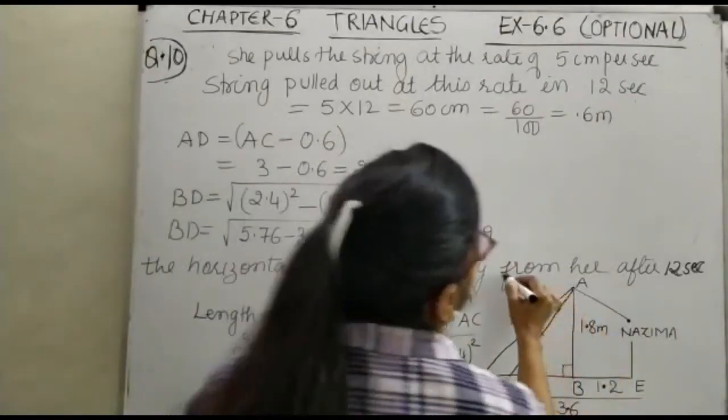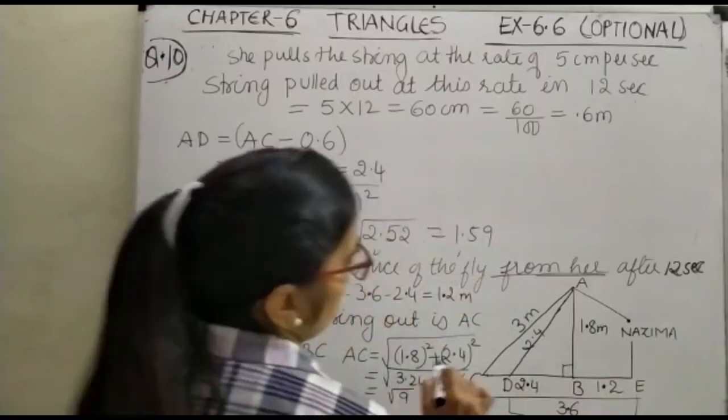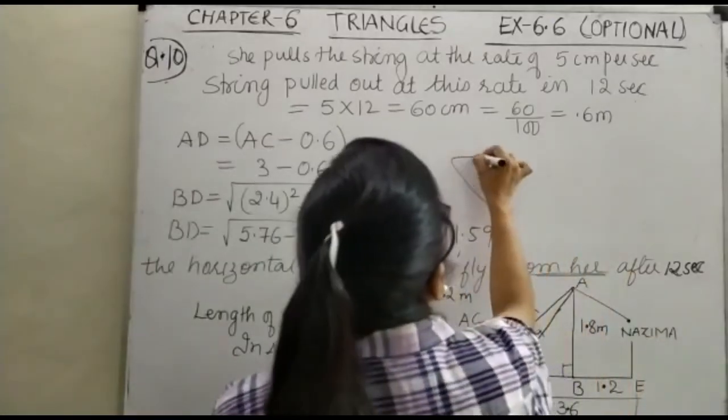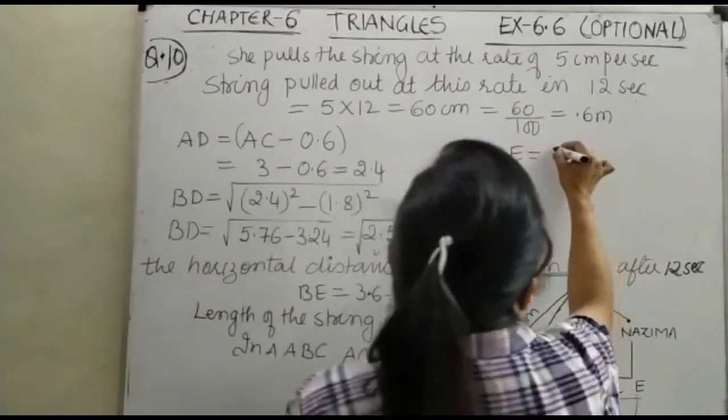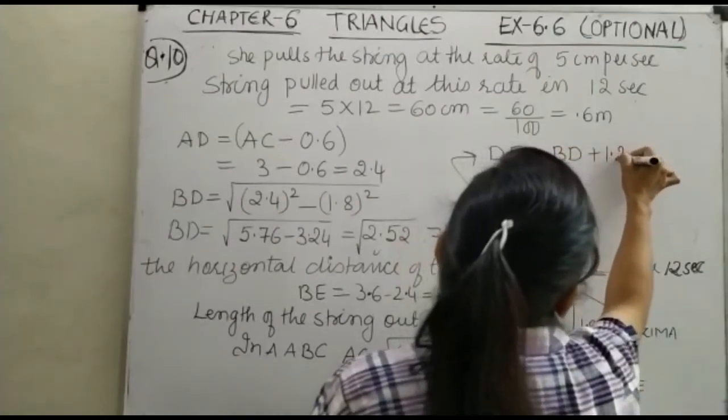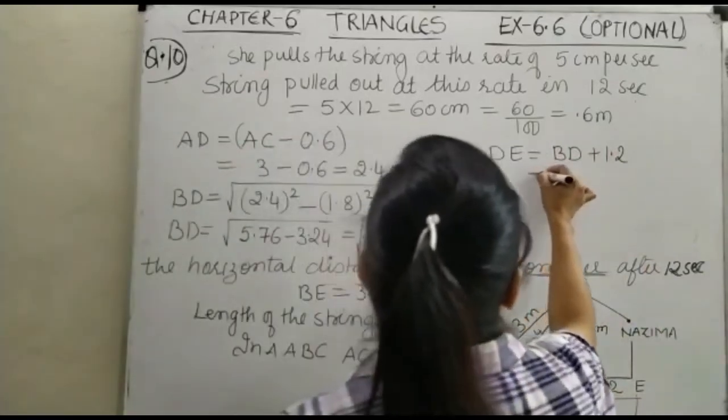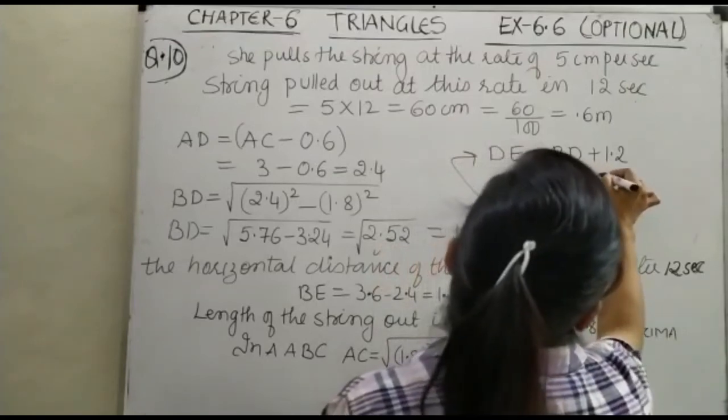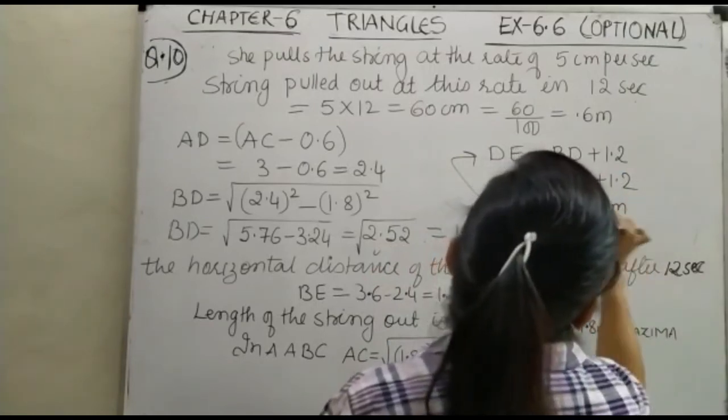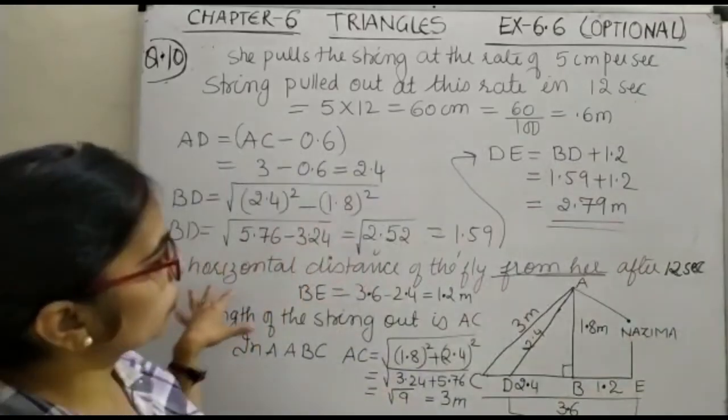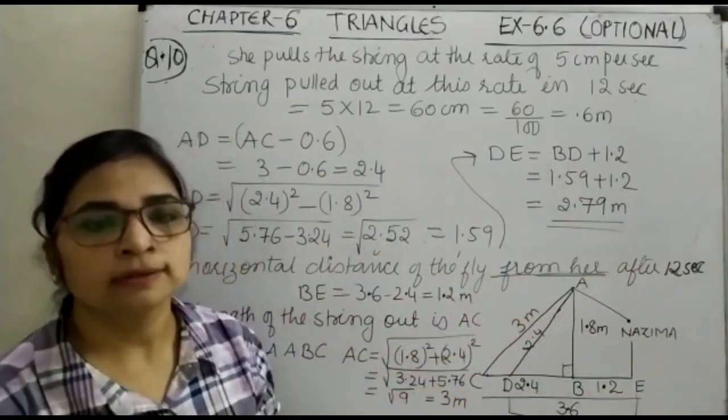Now in our question we are asked to find the horizontal distance of the fly from her, from Nazima. That means we are supposed to work out this DE. DE is equal to BD plus 1.2, that is the horizontal distance from Nazima after 12 seconds. BD is 1.59 plus 1.2 which will give you 2.79 meter. So this is how we have worked out the horizontal distance of the fly from Nazima after 12 seconds and also the length of the string out. Thank you.